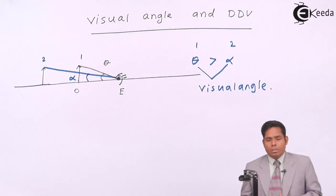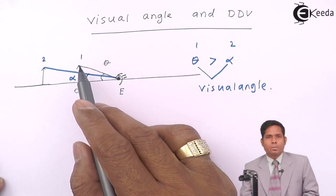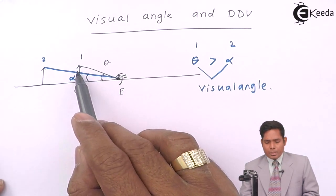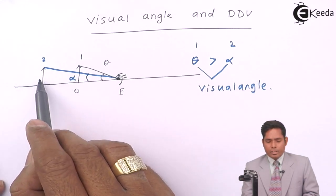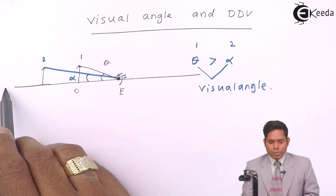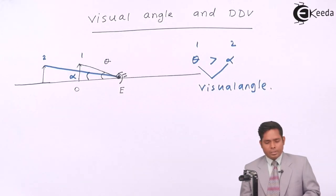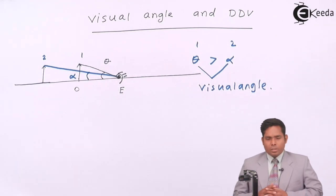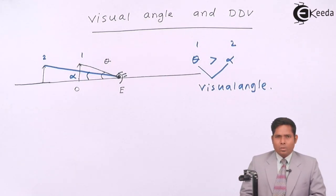Greater the visual angle, the greater the size of the object appears to be. So this object, when placed near, appears to be larger in size than when placed far. If I keep moving the object very, very far away, the angle will keep on decreasing. So the definition of visual angle is: the angle subtended at the eye by an object is called the visual angle.